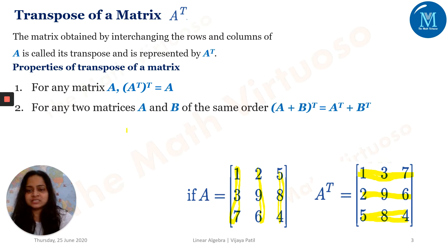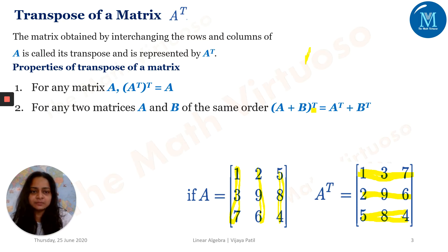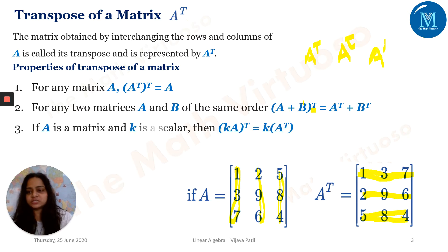Then for any two matrices A and B of the same order, (A + B) transpose will give me A transpose plus B transpose. So this transpose operation gets distributed into A^T and B^T. Most books use A^T as the notation, though some use A^t or A dash as notation for the transpose.